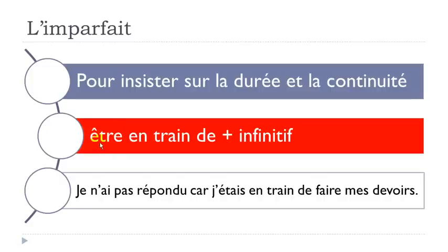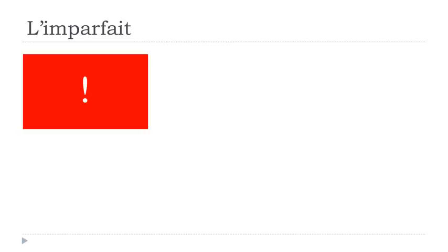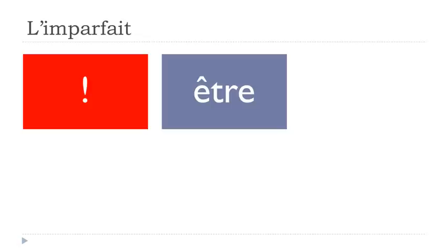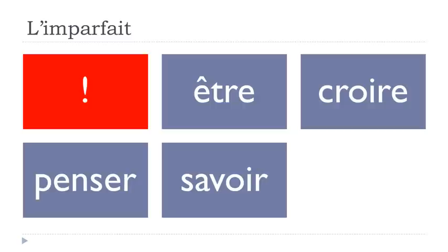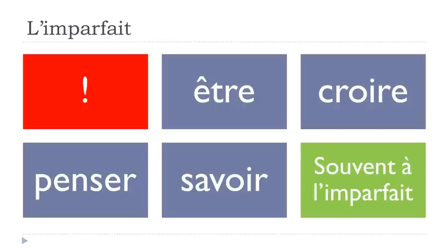One important thing to keep in mind: 'être' (to be), 'croire' (to believe), 'penser' (to think), and 'savoir' (to know) are often used in l'imparfait form. Not always — it's not a strict rule in French grammar — but very often.